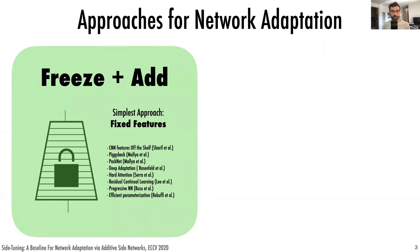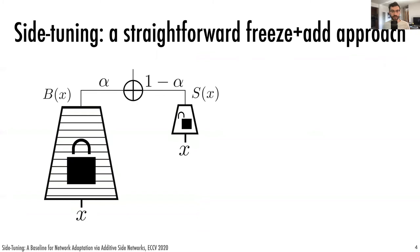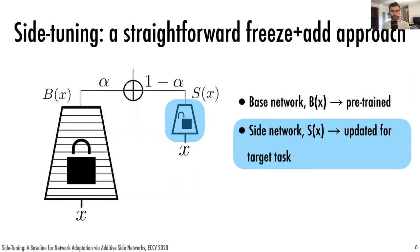Side-tuning is a straightforward freeze-and-add approach, consisting of a frozen base network, a side network that gets updated over the course of training in the target task, and the two are combined via alpha blending.